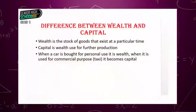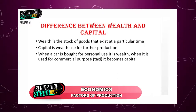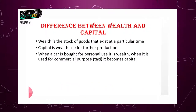Differences between wealth and capital: wealth is the stock of goods that exist at a particular time. But when we talk of capital, it is that wealth which is used for further production. So if you have a man-made resource that exists at a particular time, it is wealth. The very moment you use it for further production, it becomes capital. For example, when you buy a car for personal use, it is your wealth. But if you decide to use the car as a taxi or for commercial purposes, it becomes capital.